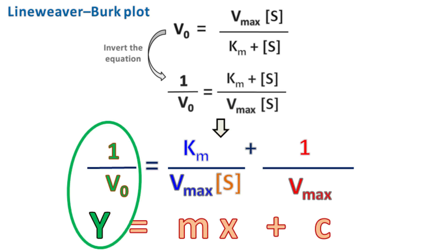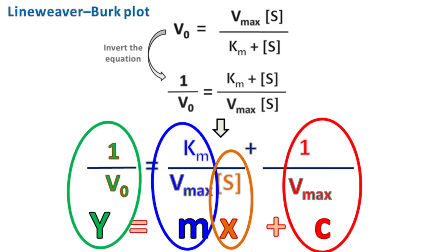Here, Y will be equal to 1 upon V0. M, which is the slope of the graph, will be equal to Km by Vmax. The X value will be equal to 1 by S and the intercept C will be equal to 1 by Vmax.